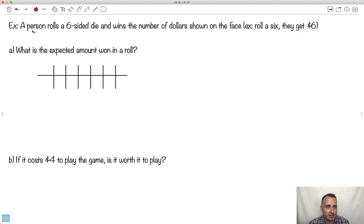And let's go ahead and do an example. So a person rolls a six-sided die, and you win the number of dollars shown on the face. So for example, if you roll a six, you get six dollars. If you get a three, you get three dollars, and so on. What is the expected amount on a roll?